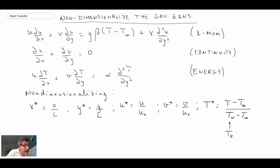And in this, what we've done is L is a characteristic length scale, and u-naught is some arbitrary reference velocity that we have not yet defined.